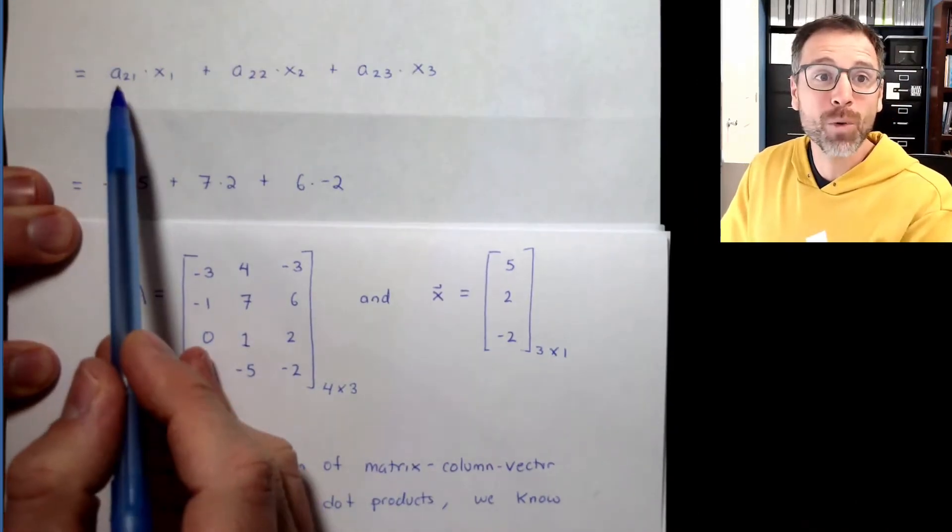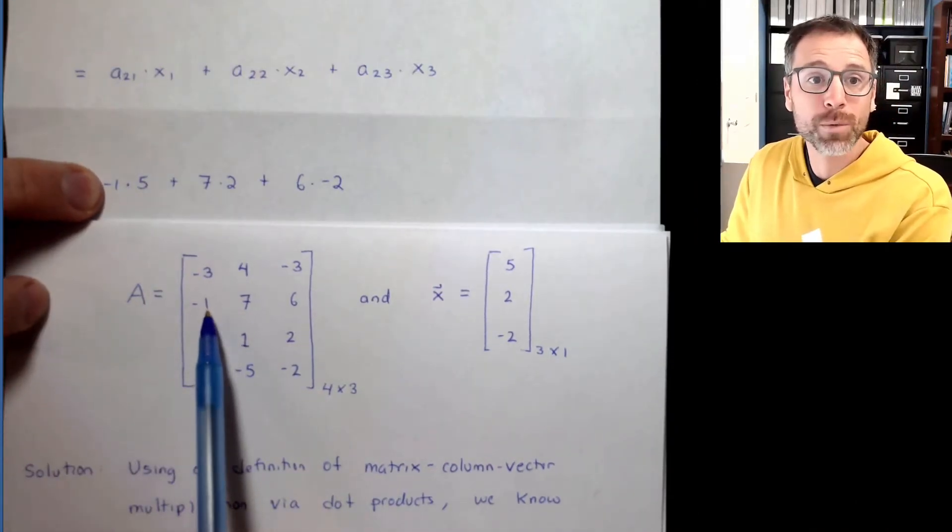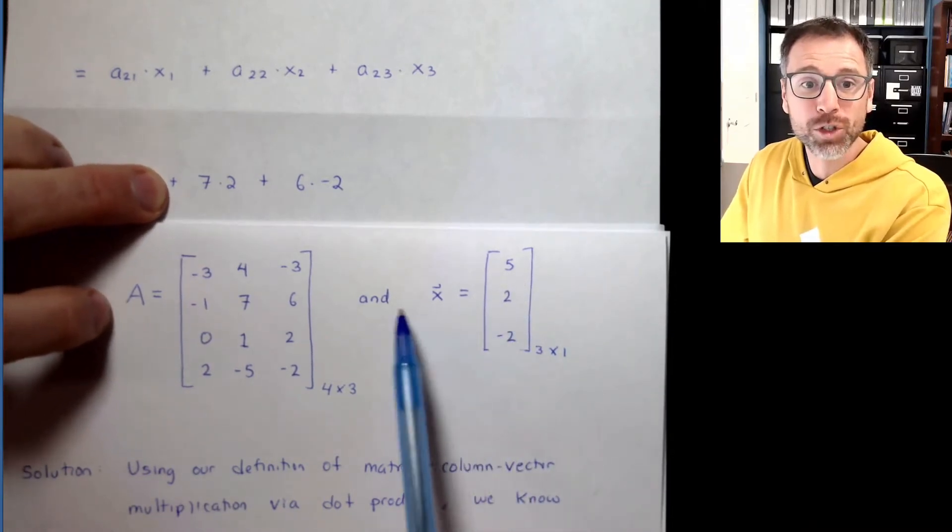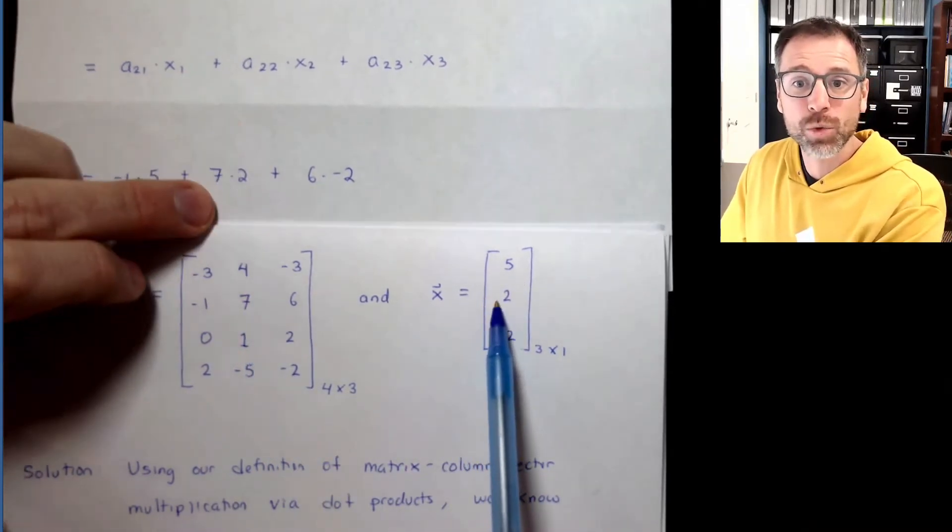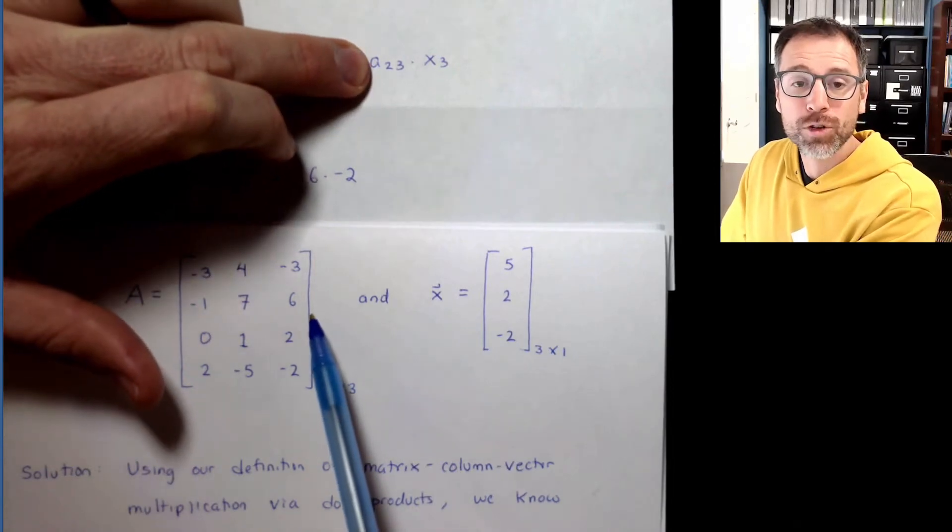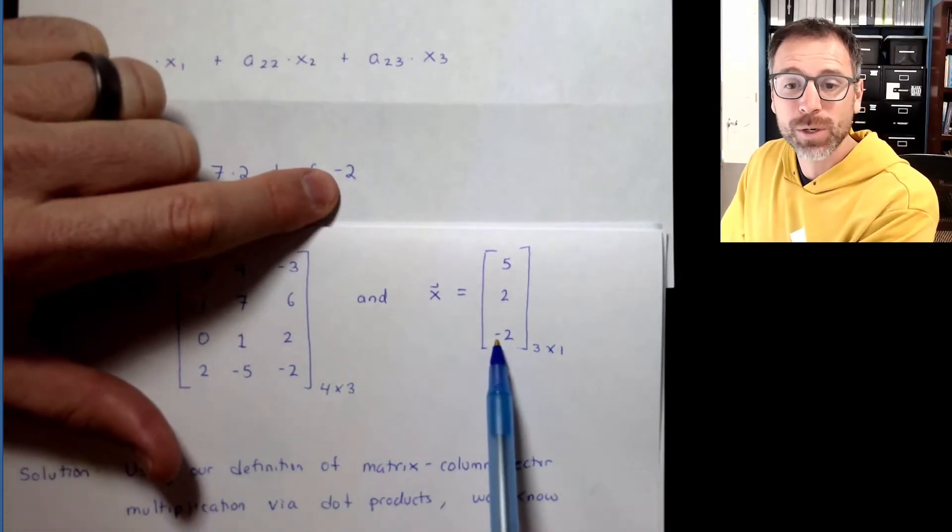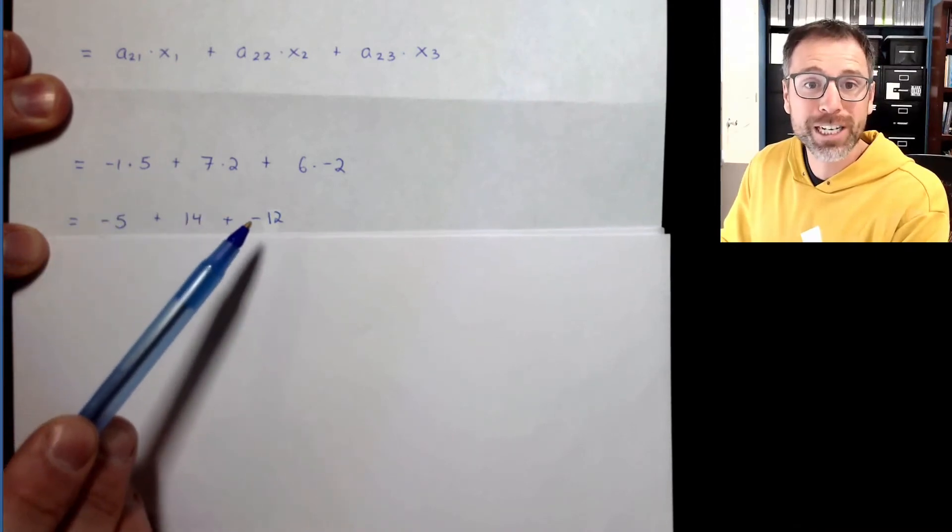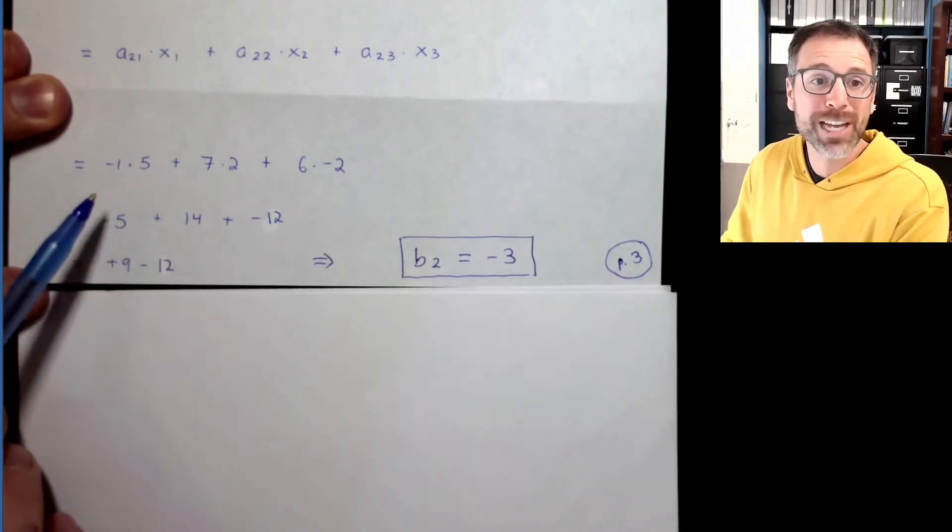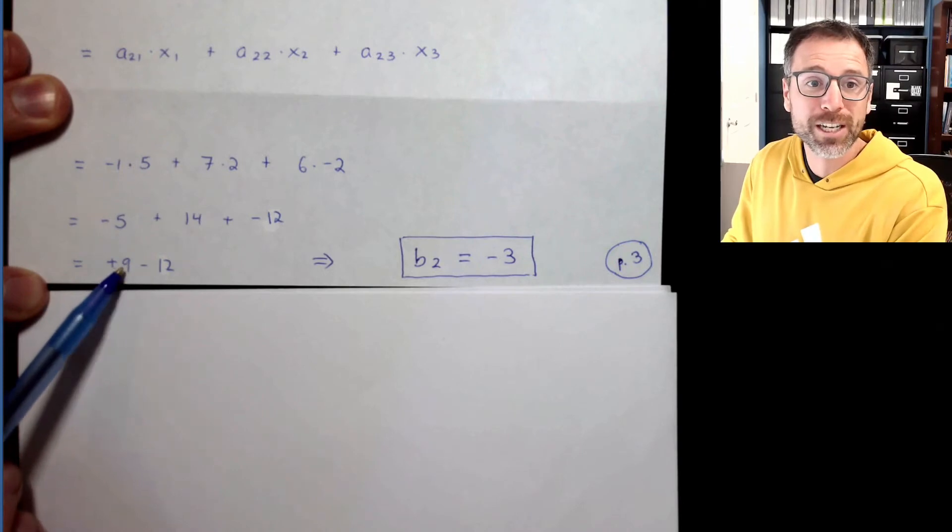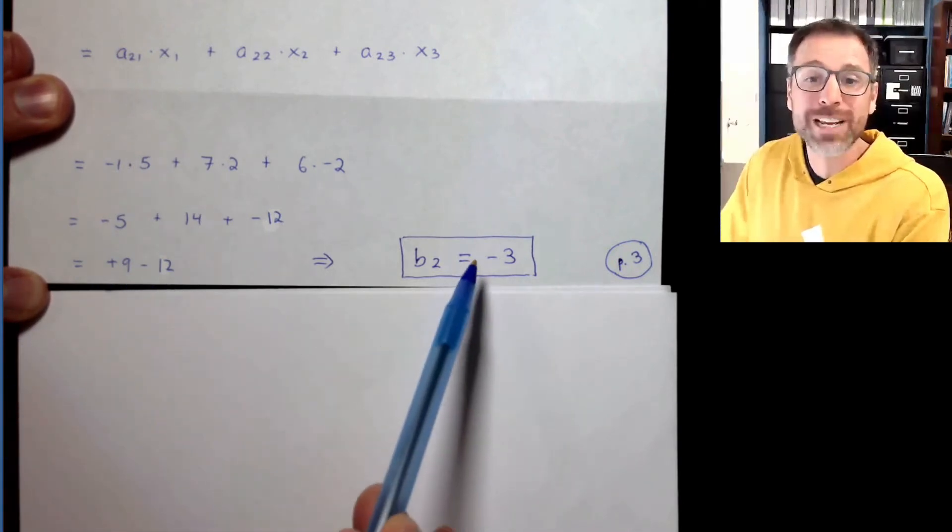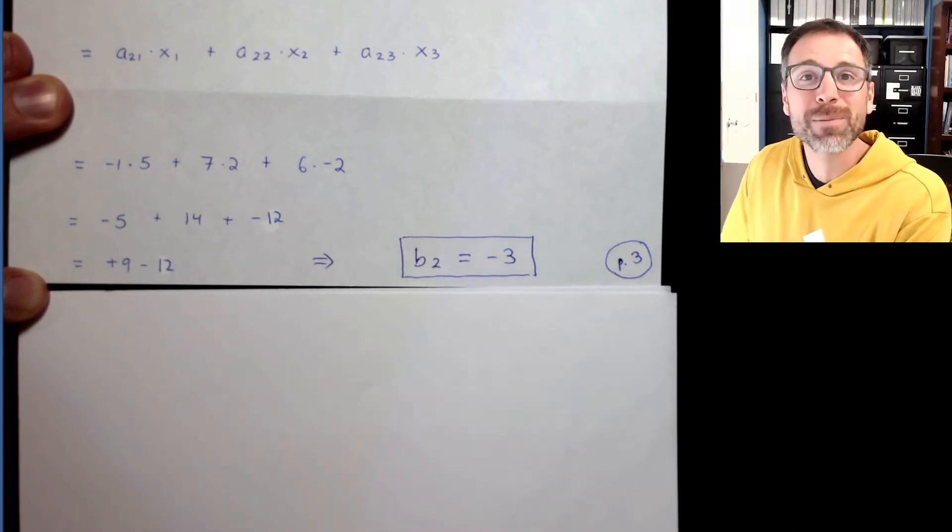At this point, we can just remember what the values were. A_21 was negative 1, X_1 was 5, A_22 was 7, X_2 was 2, A_23 was 6, X_3 was negative 2. We do each product individually: negative 5 plus 14 plus negative 12. Perhaps we say that negative 5 plus 14 is 9, and then 9 minus 12 is negative 3, so the second entry of our output vector is negative 3.